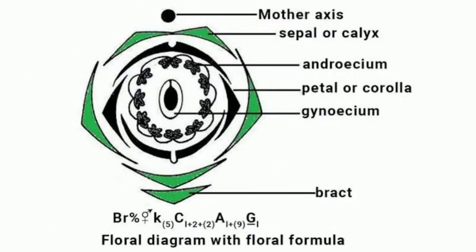Here we have an example — one floral diagram shown with all the parts. So we have the mother axis, sepal or calyx, and androcium with many stamens which are connected. Petal or corolla. You can see the gynoecium with a monocarpellary pistil, meaning ovary with a single ovule. And there is a bract shown at the base of the flower.